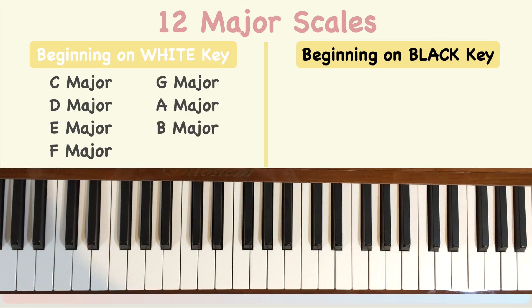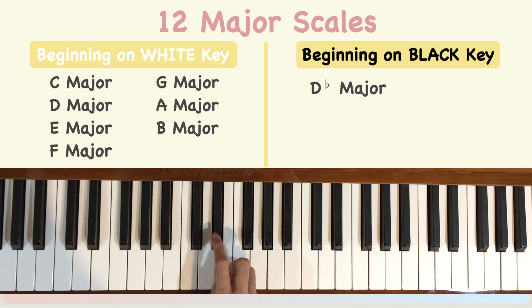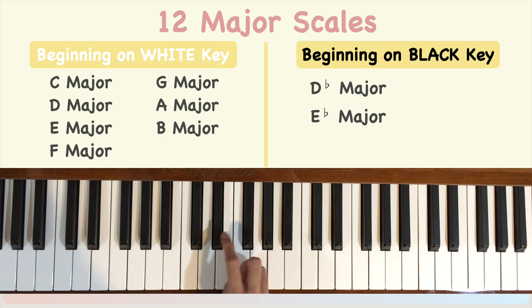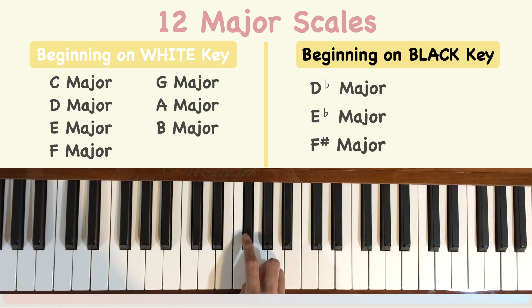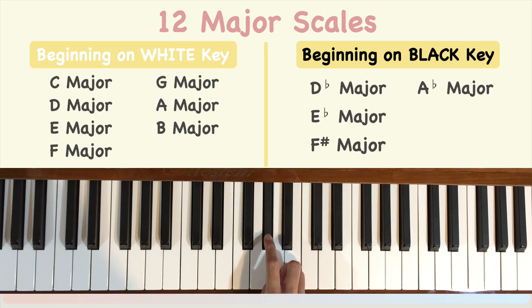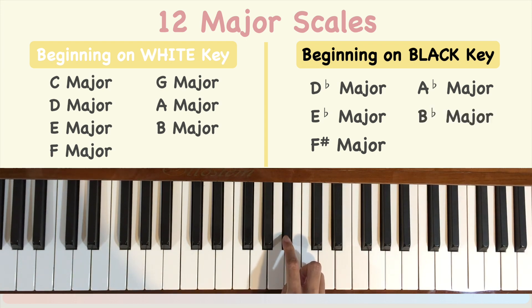Beginning on black notes, there are Db major, Eb major, F sharp major, Ab major, and Bb major. In total, there are 12 major scales.